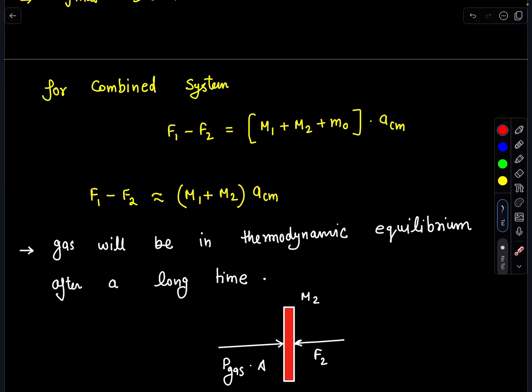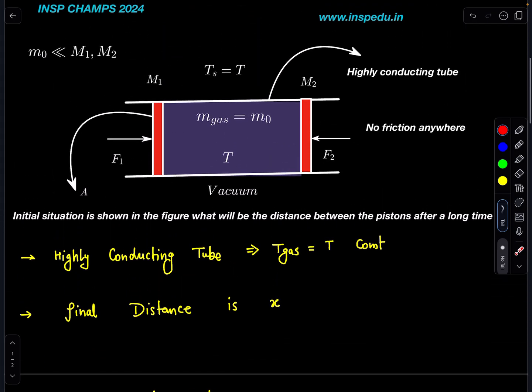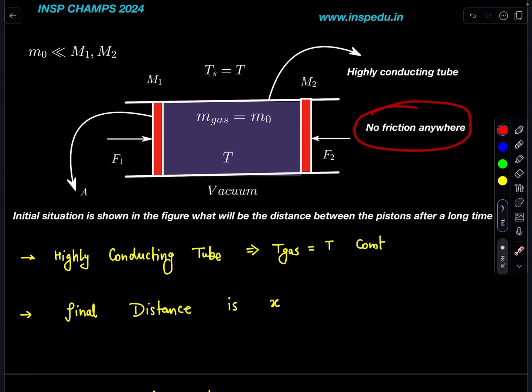The reason being the separation between pistons is not changing, we are assuming. But if we are encountering the real situation, then it can have some kind of oscillations also. That means minimum distance will come and after that it rebounds back. To achieve thermodynamic equilibrium, there must be some presence of friction. But we have written here no friction anywhere.